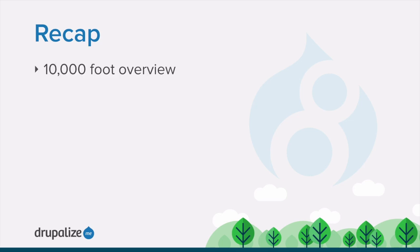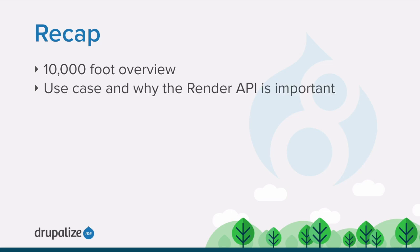And that's the 10,000 foot overview of the Drupal render API. In this tutorial, we said that the render API exists to defer the rendering of content to HTML in order to allow easier processing during the life cycle of a request, that understanding render arrays is critical for anyone writing code for Drupal, and that anyone writing modules will benefit from understanding the complete rendering pipeline. I recommend you check out the render arrays tutorial next, and continue from there.